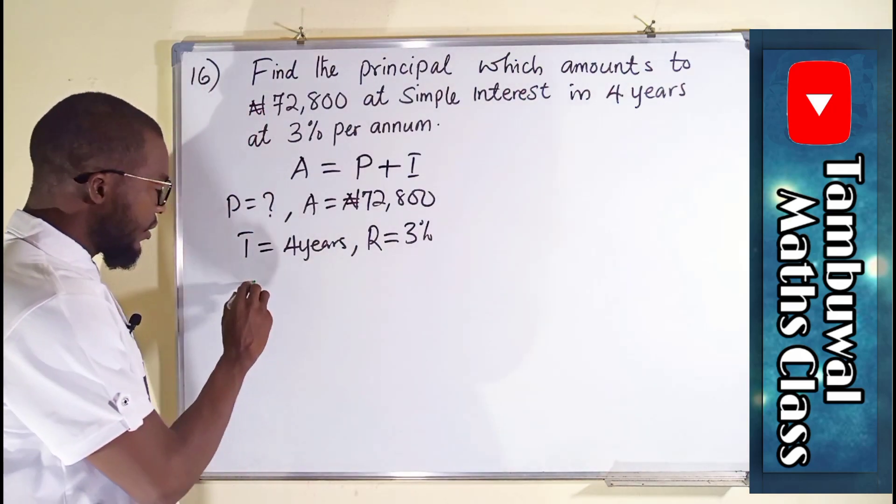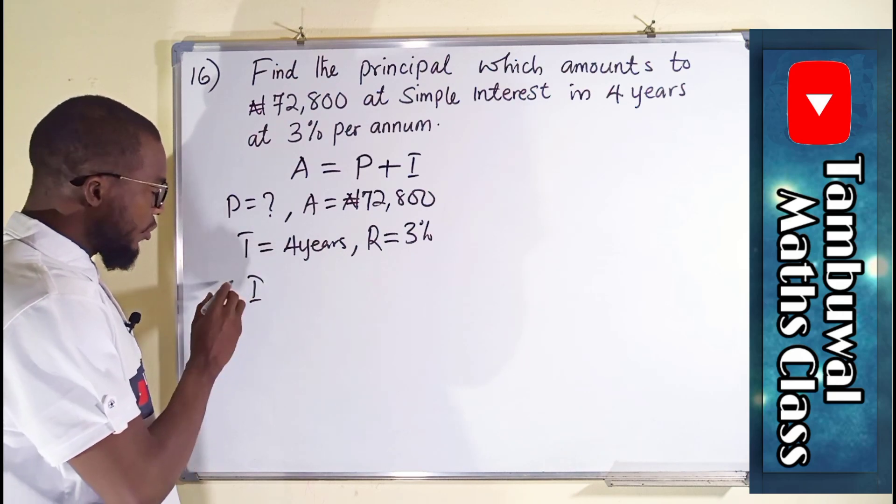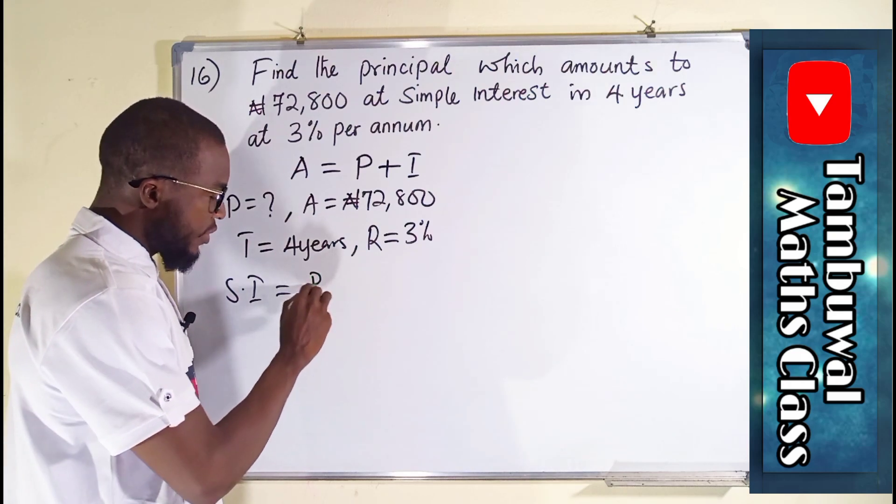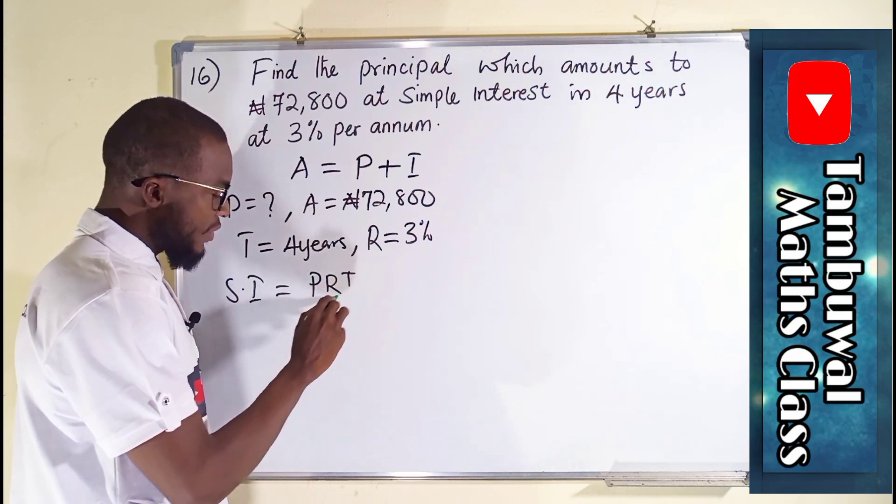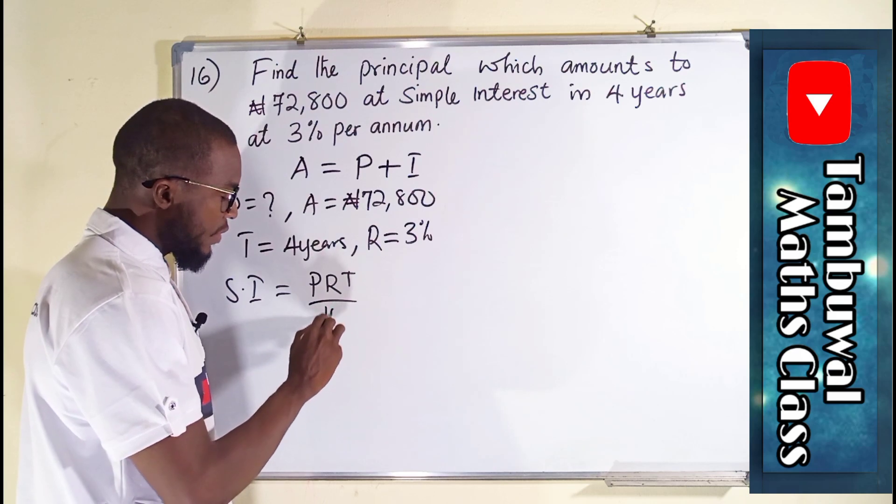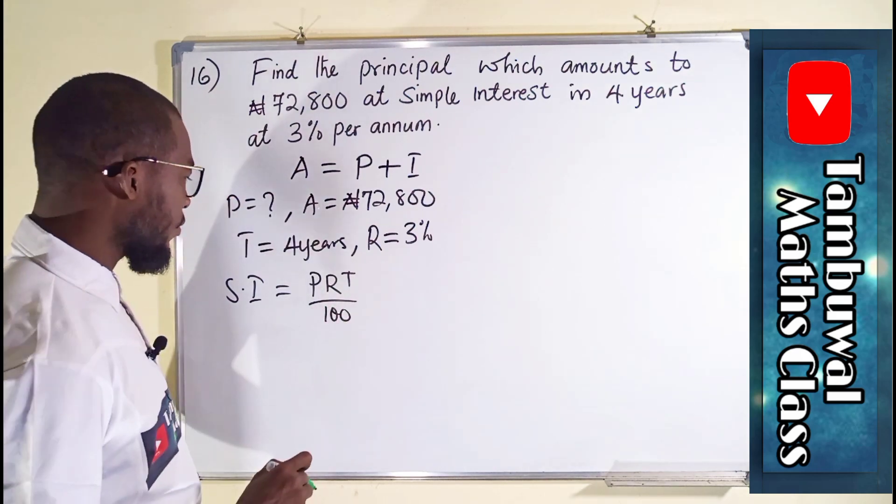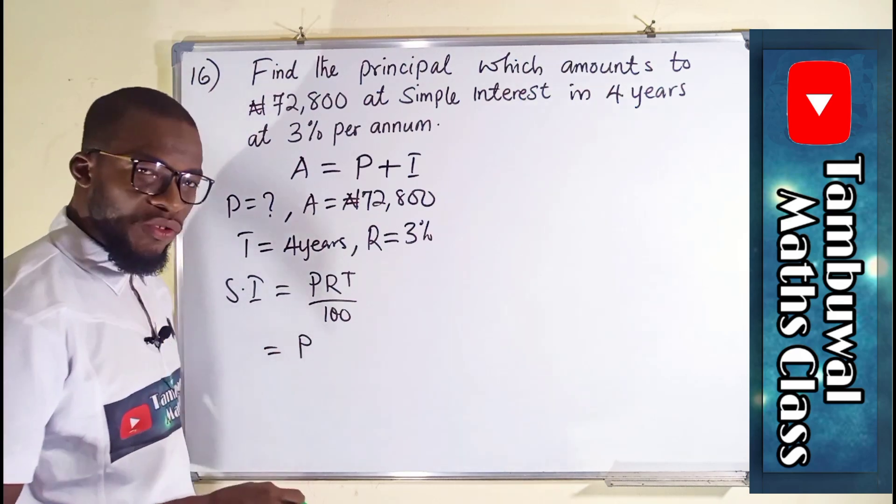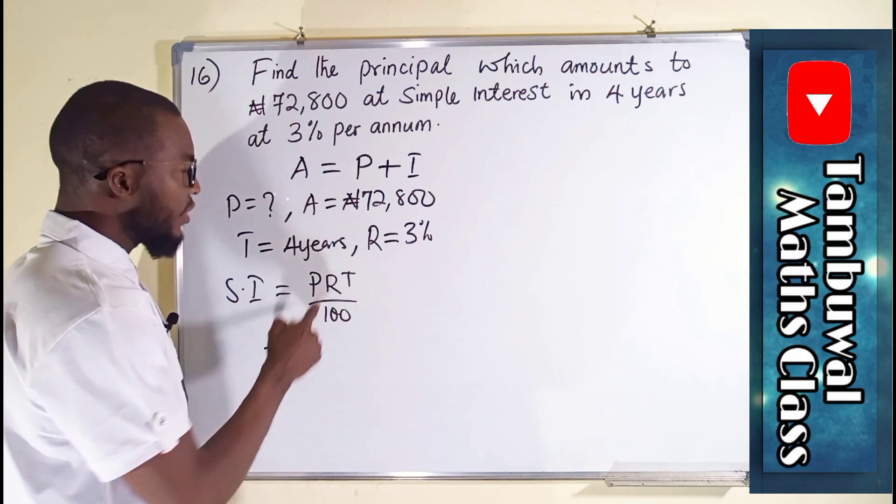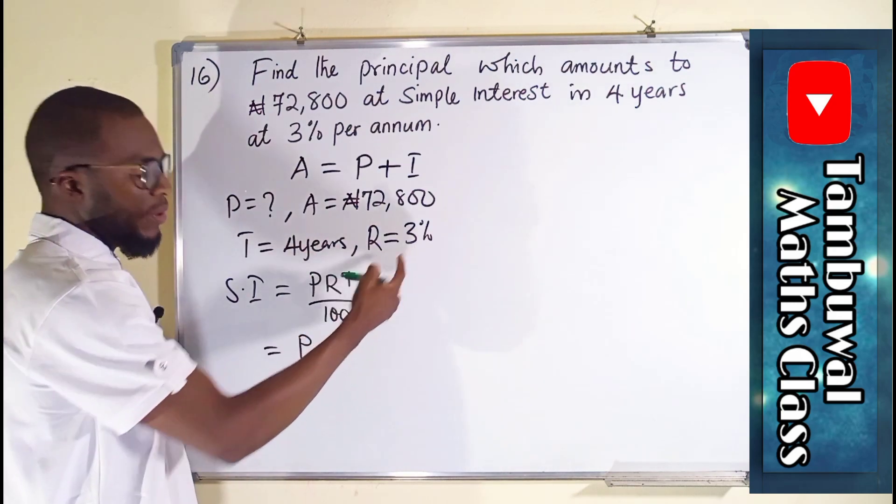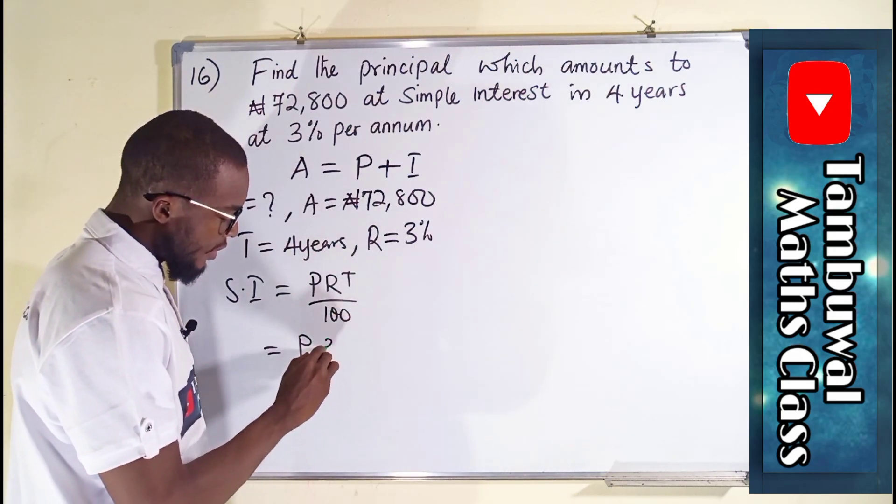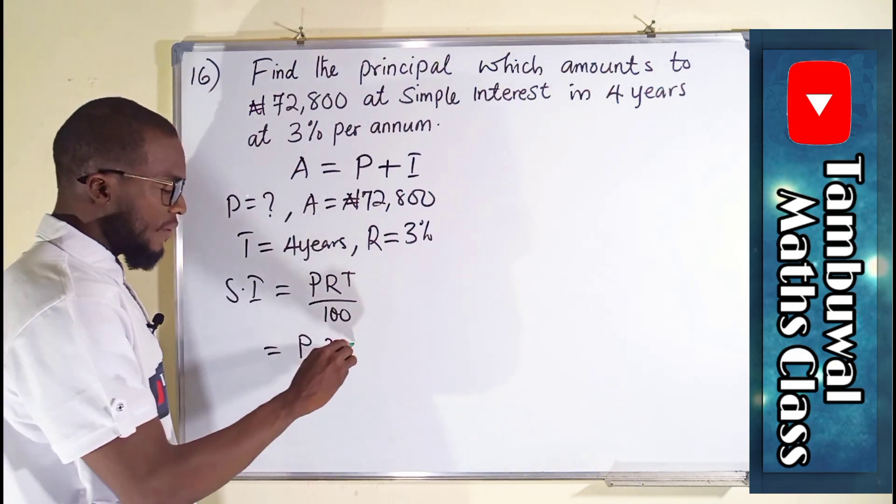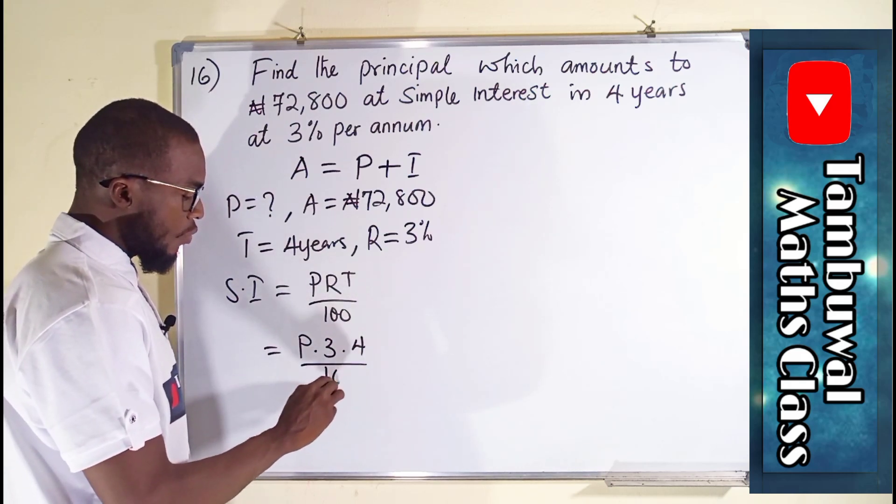So, in simple interest, the formula is the simple interest, SI, equal to the principal times the rate times the time all divided by 100. Simple interest will now be equal to P because it is unknown. But the rate is given from the question as 3%. So we multiply it by 3. We also have to multiply by the time, which is 4 years. All divided by 100.